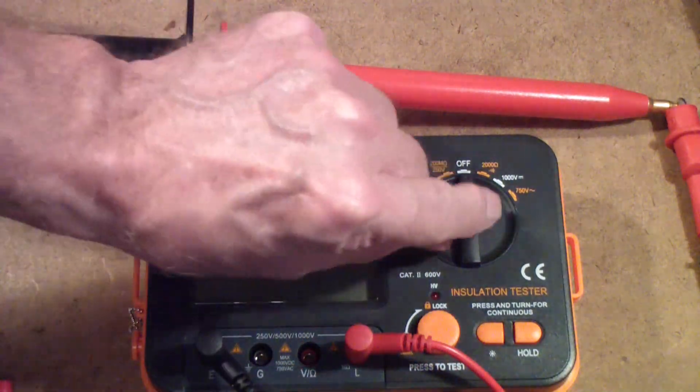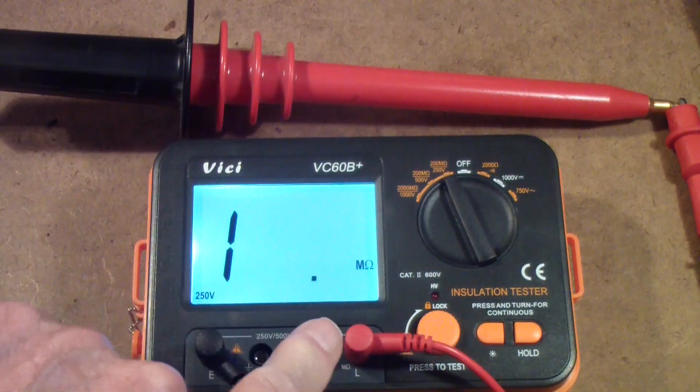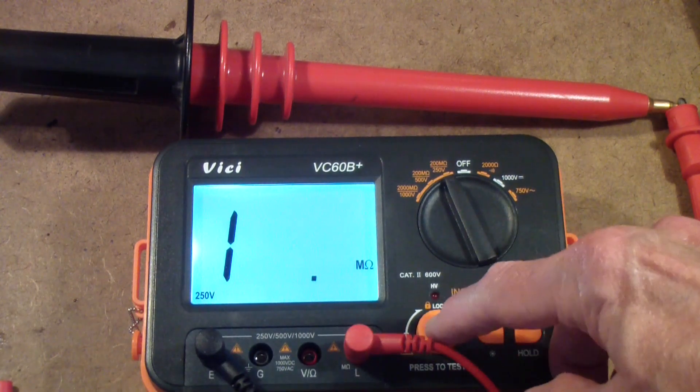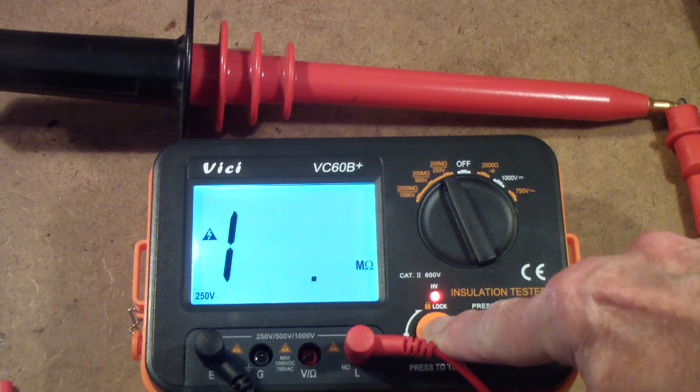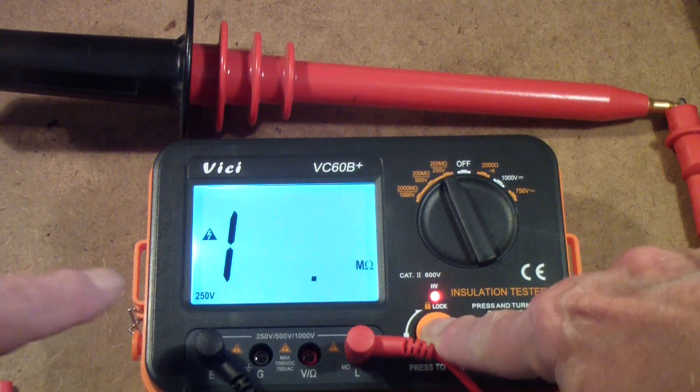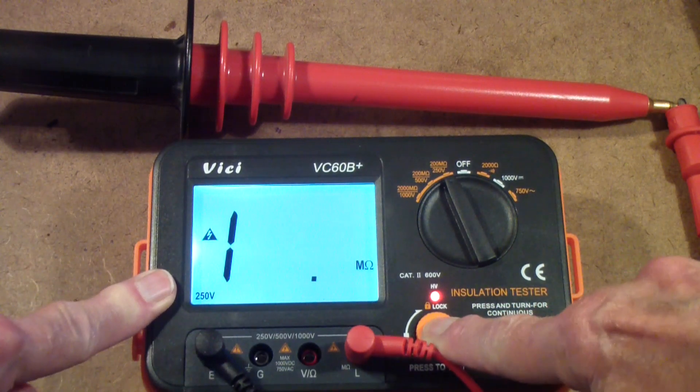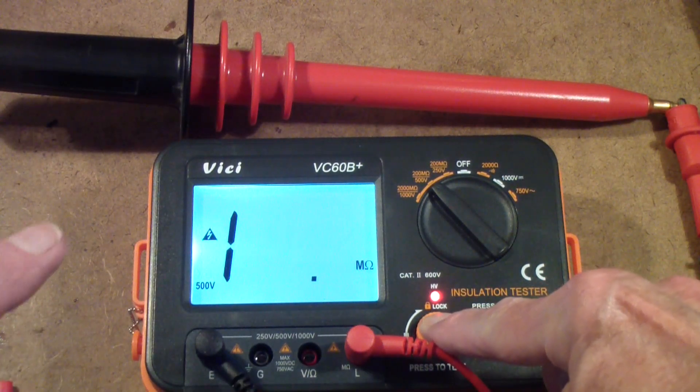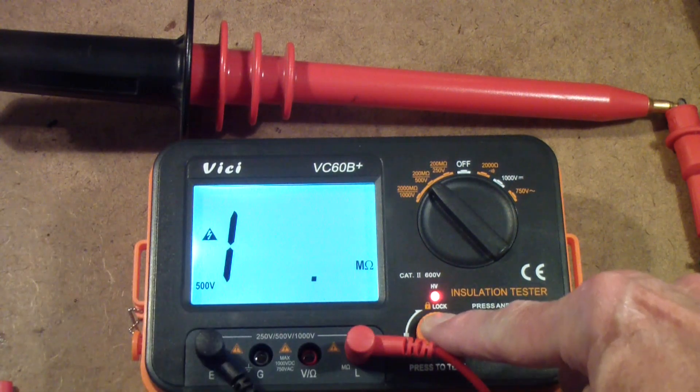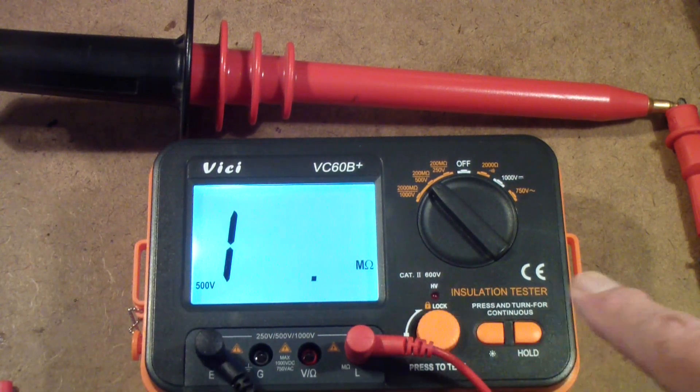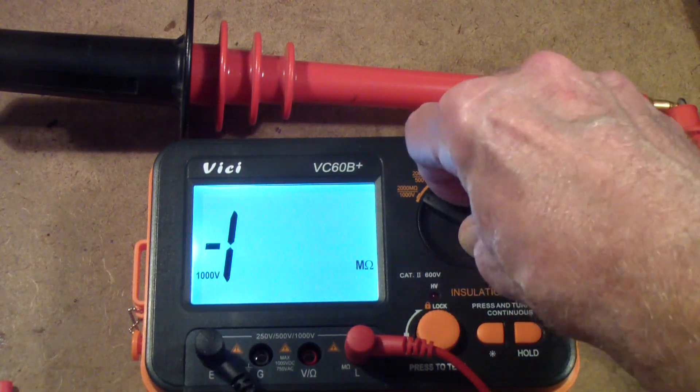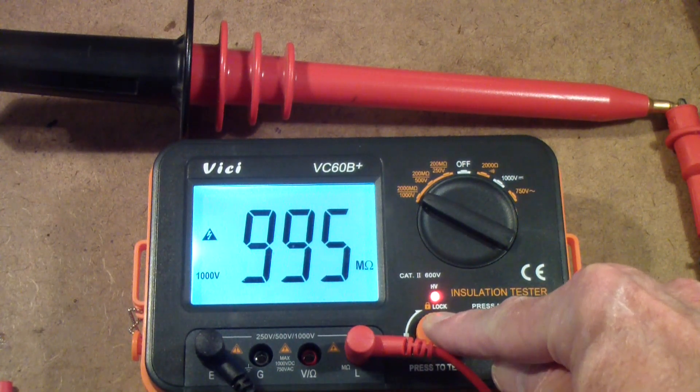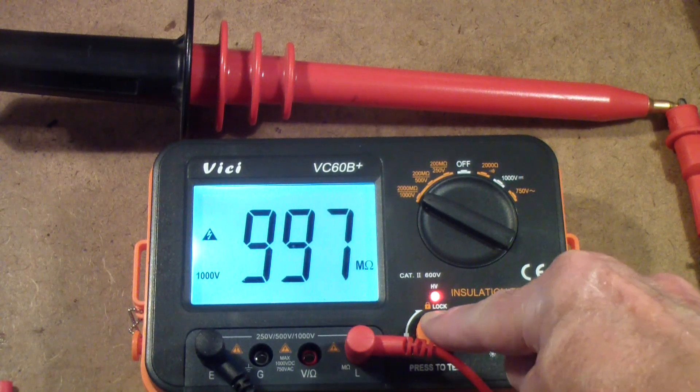Now we have this connected to the VC60B and let's measure the resistance using 250 volts. Notice it does not read. That is the way that this particular meter shows over range. So let's go to 500 volts once again. And by the way, I like the fact that the meter both shows you a red light and also beeps at you to warn you that there's high voltage on the test leads. Now let's go to 1000 volts. And there, you see, we can read that 1000 mega resistor, but only in the highest voltage position of this meter.